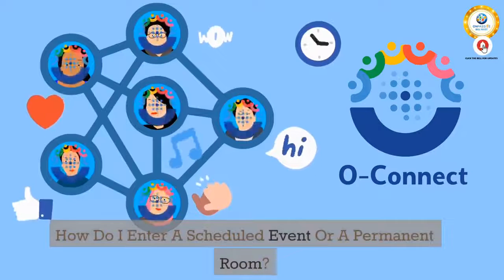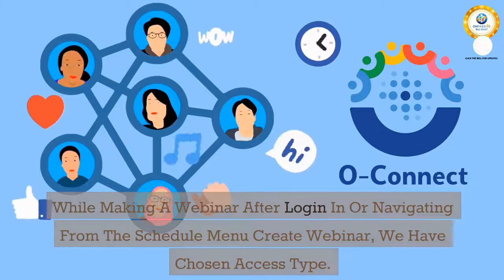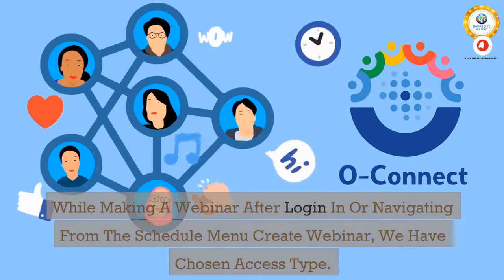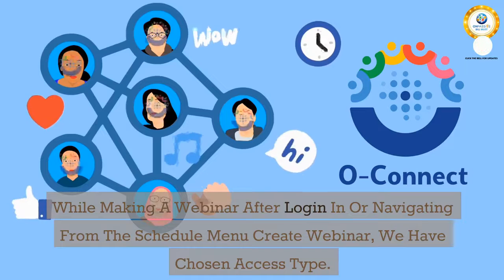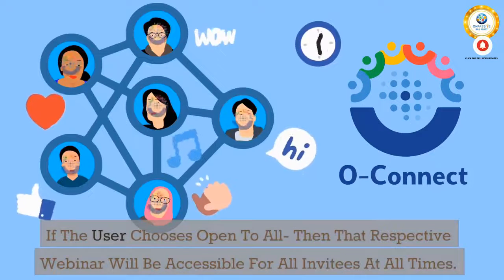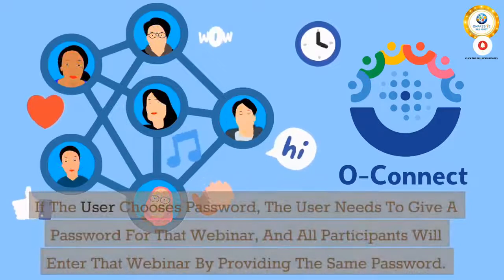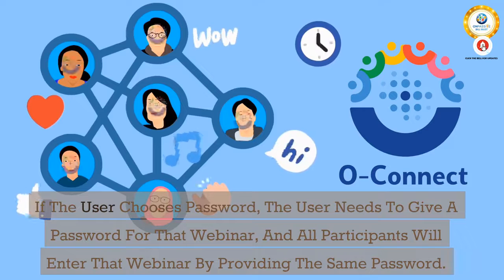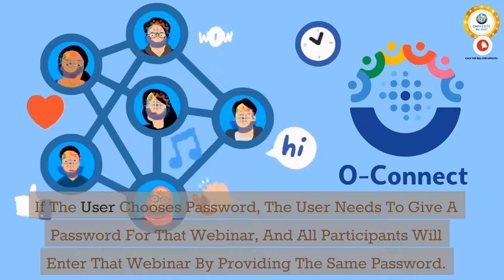13. How do I enter a scheduled event or a permanent room? While creating a webinar after login, navigating from the schedule menu to Create Webinar, you choose access type. If the user chooses "Open to All", that webinar will be accessible for all invitees at all times. If the user chooses "Password", the user must provide a password, and all participants will enter by providing that same password.